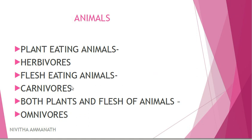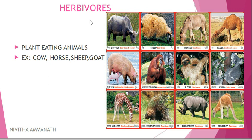Plant-eating animals are called herbivores. Flesh-eating animals are carnivores. Both plants and flesh of animals — those are omnivores. Herbivores eat plants. Examples of herbivores: cow, horse, sheep, goat, giraffe, kangaroo. Plant-eating animals are called herbivores.